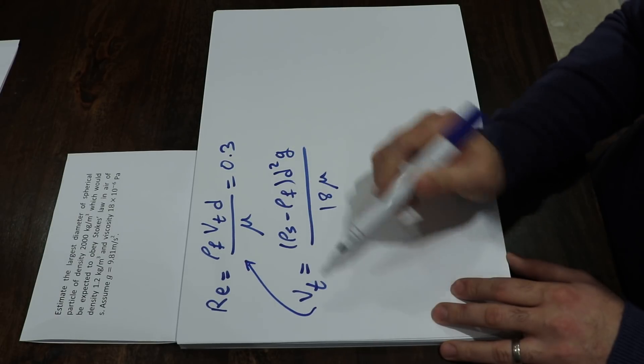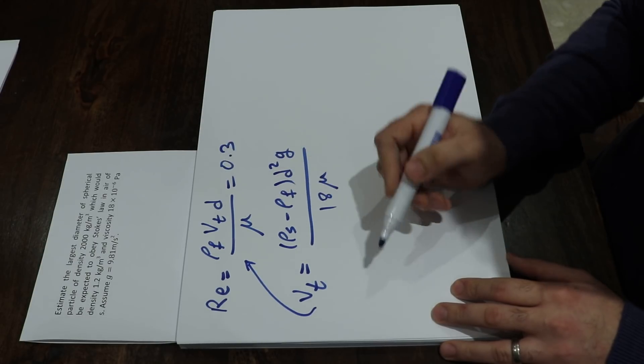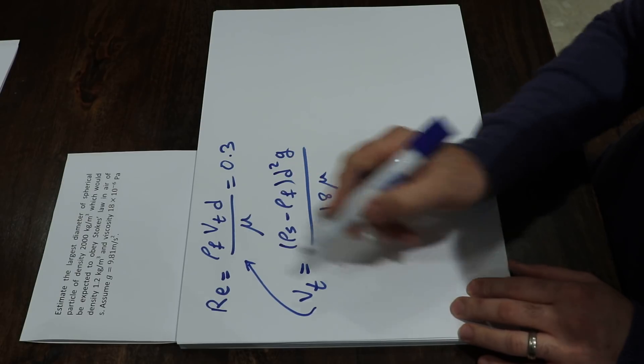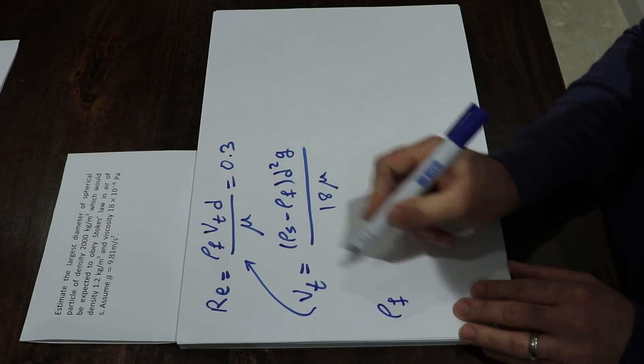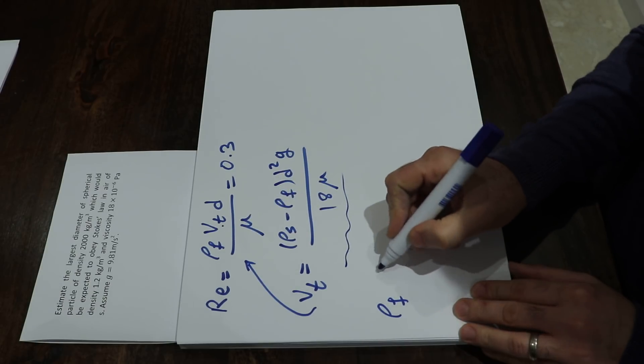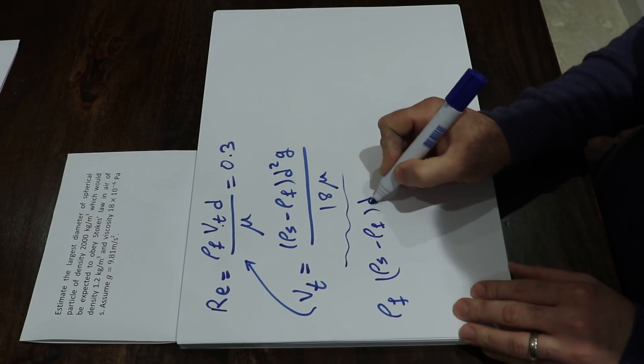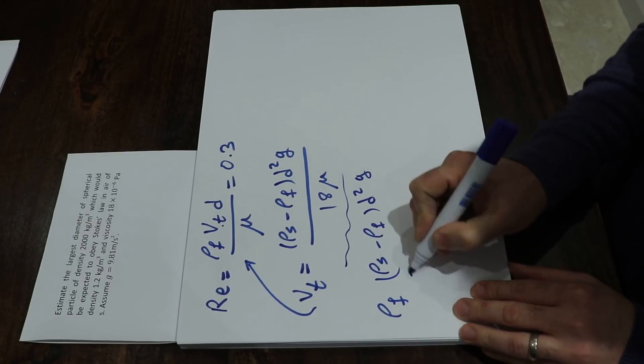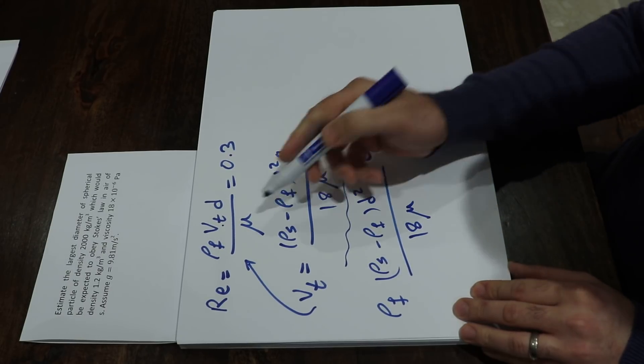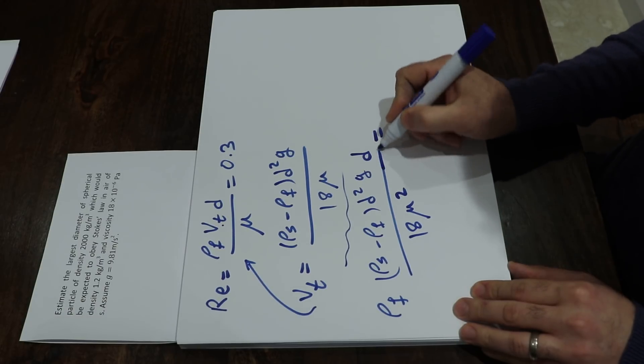If you plug the definition of Vt into the Reynolds number and rearrange the equation, you can calculate the largest diameter of the particle. So you write ρF times, instead of Vt here, I use this definition: (ρs - ρF)·d²·g / (18μ) times d divided by μ. This should equal 0.3.